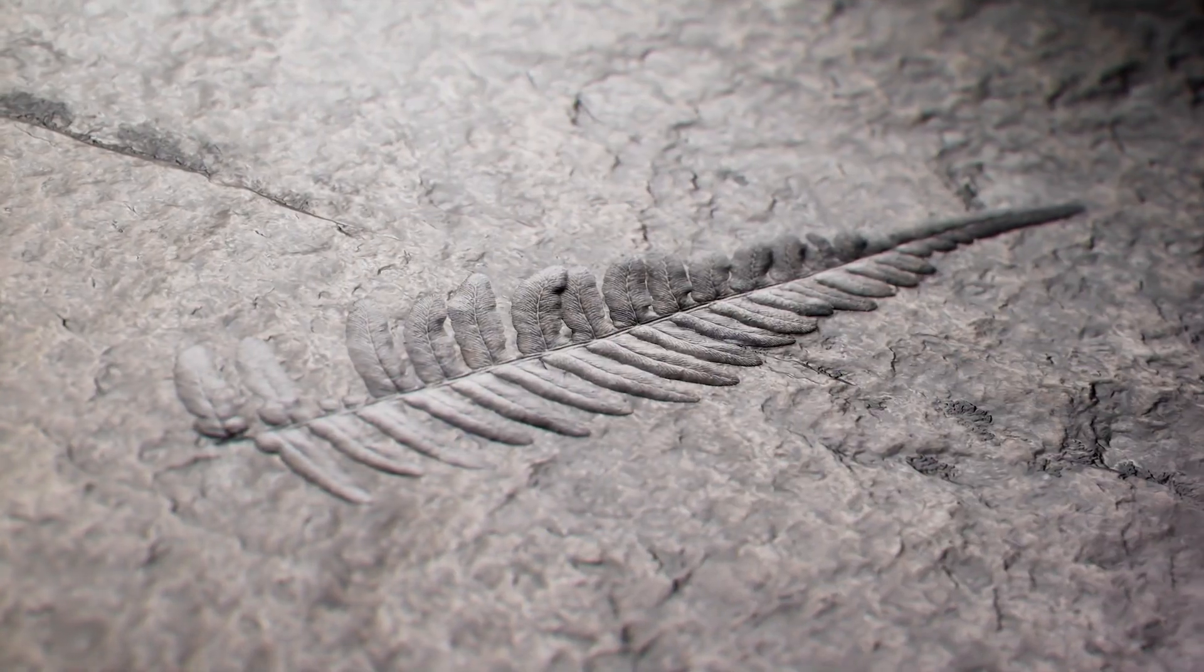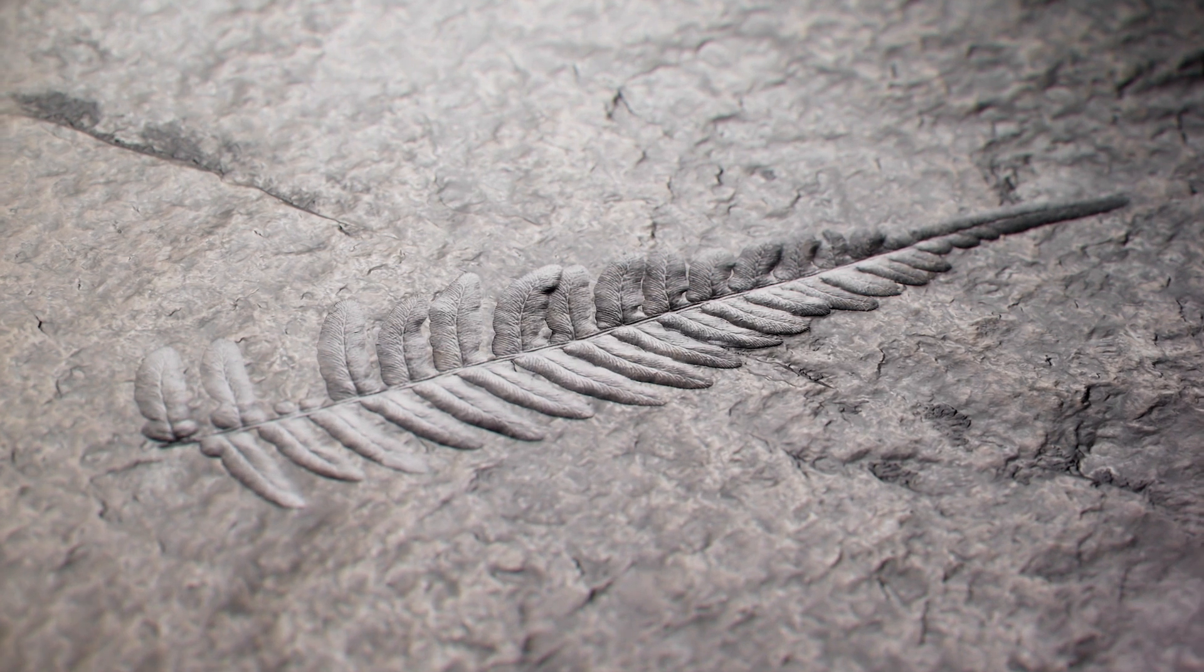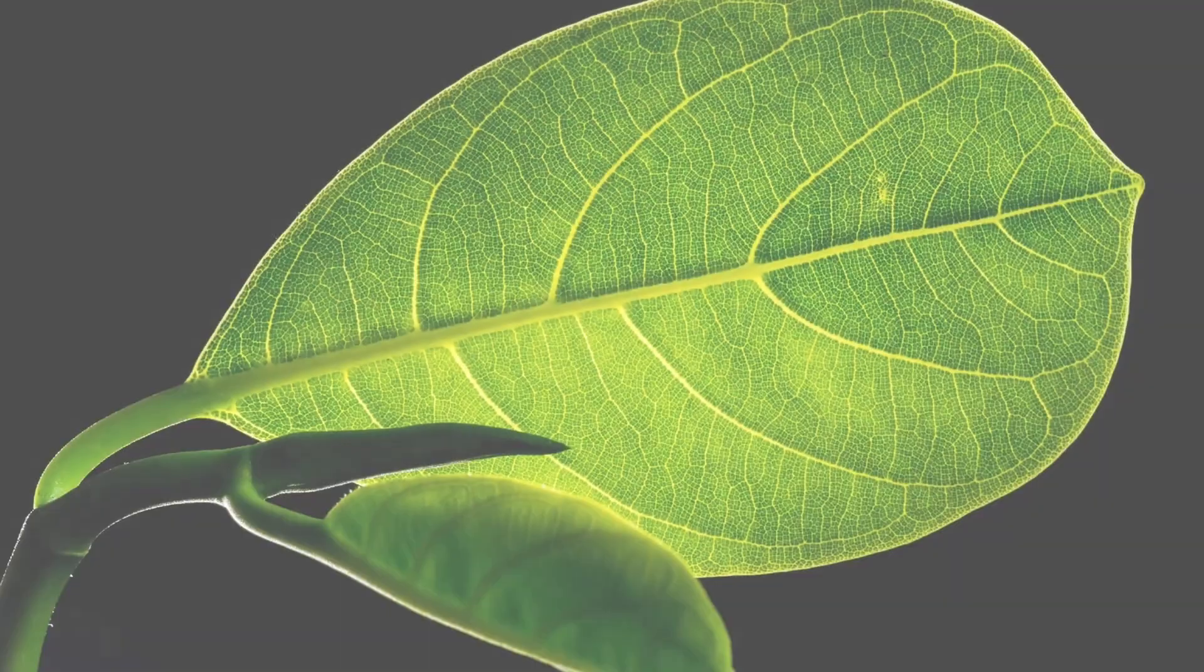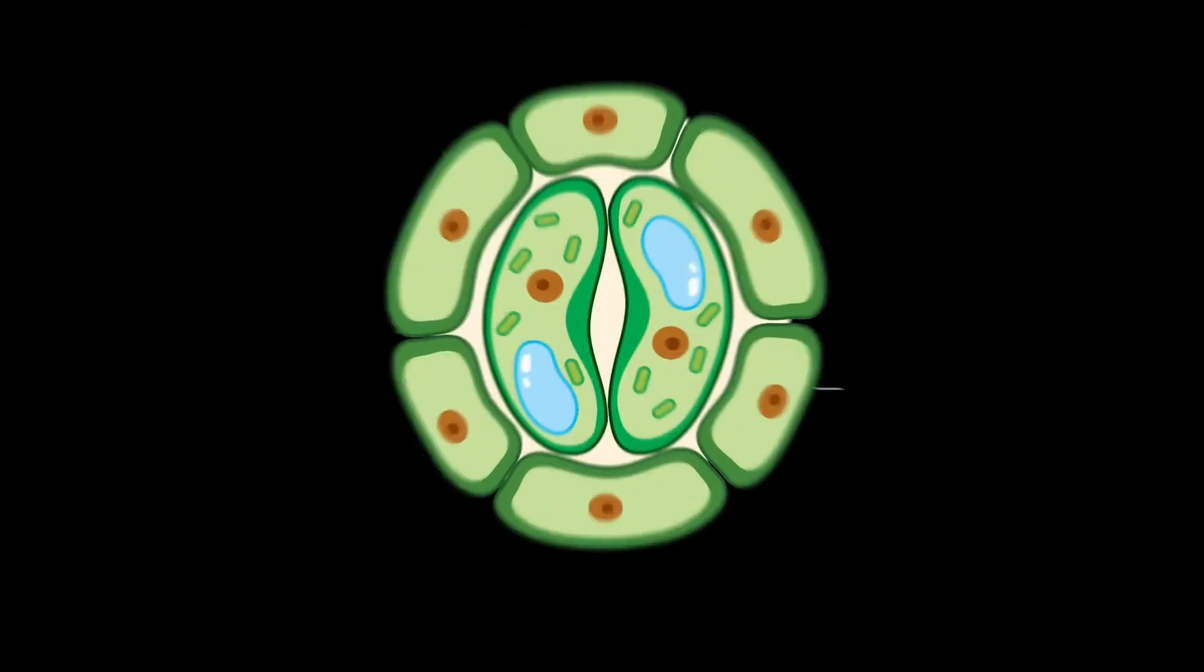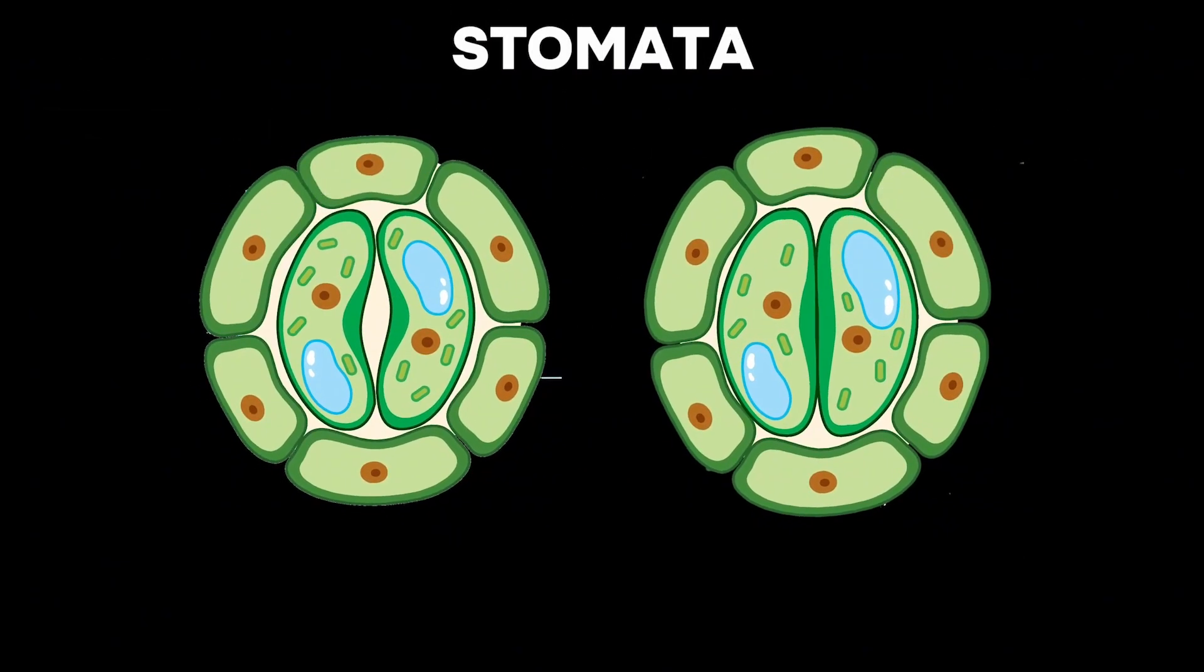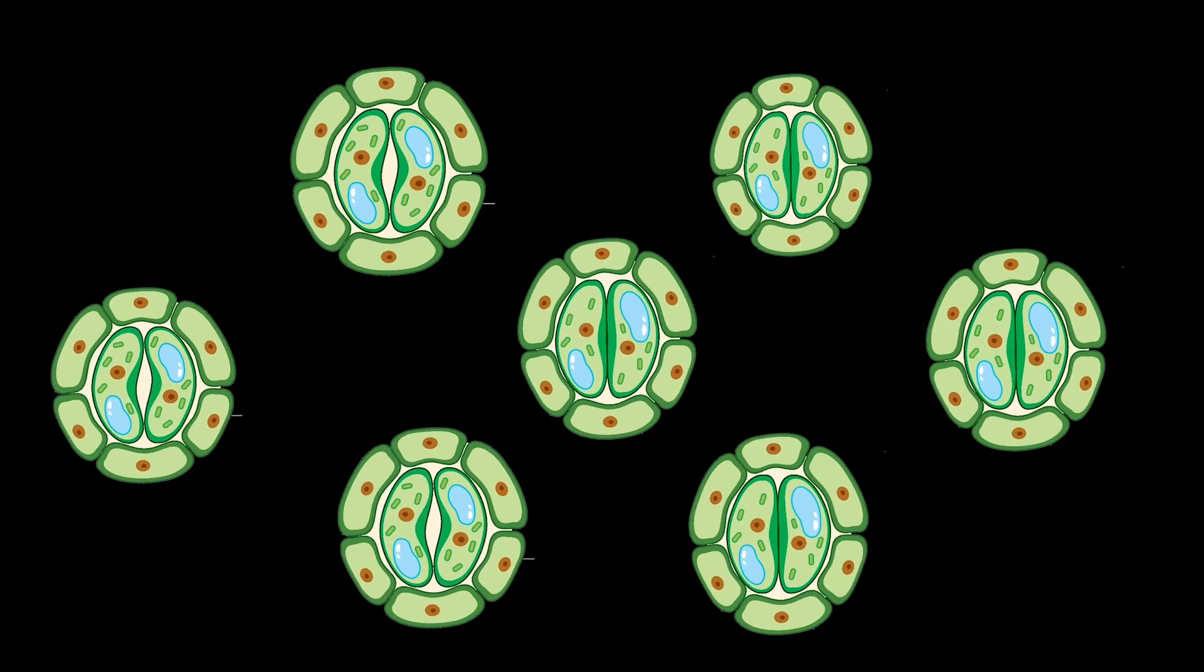Scientists similarly use fossilized plant leaves to deduce ancient carbon dioxide levels, which influence temperature. Leaf pores, called stomata, open and close based on CO2 levels. More pores point to higher prehistoric CO2 levels.